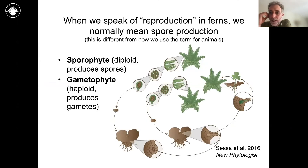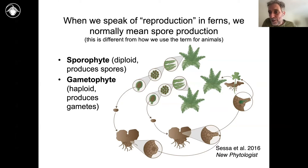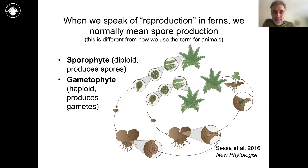When we speak of reproduction of ferns, we normally mean spore production, which is different than what we mean in animals. When we talk about reproduction in animals, we are talking about fertilization, the production of a new diploid, whereas with ferns, when we speak of reproduction, we're usually talking about the production of spores. And we say if a fern is fertile, we mean it's making spores — not sperm and eggs, which only happens in the gametophytes, which we rarely see. So when it comes to fertility, we're talking about the production of spores by the sporophyte, typically speaking.